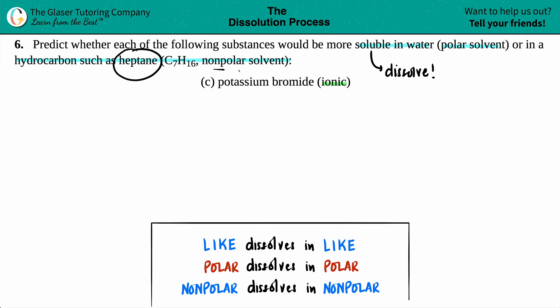So would this potassium bromide dissolve in water, which is a polar solvent, or would it dissolve in heptane, which is a non-polar solvent? Well, there's a famous saying in chemistry: like dissolves in like. Compounds or molecules that have very similar properties want to stay together.